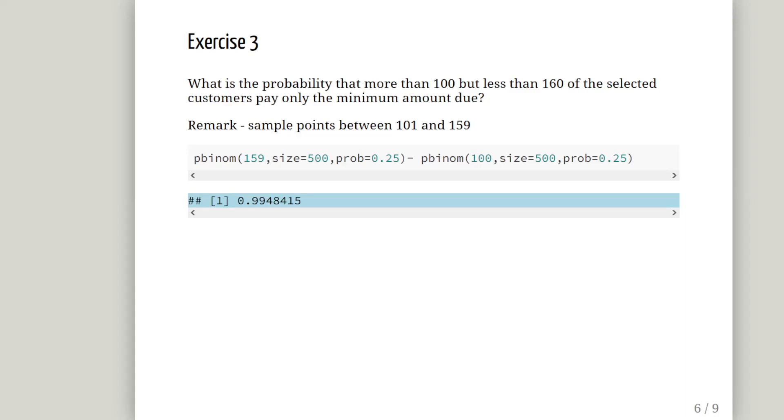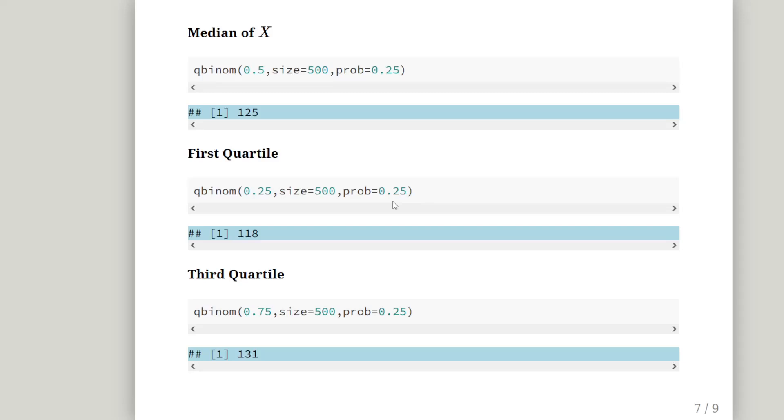Exercise 3: What is the probability that more than 100, so not including 100, but less than 160, so not including 160, of the selected customers pay only the minimum amount due? The sample points we are interested in are 101 to 159. First off we calculate the probability of being less than or equal to 159, and then from that we subtract the probability of the sample points being between 0 and 100. So less than or equal to 100. This chops out anything less than 100 from our probability. And there is our answer, 0.99. So actually most of them. That really makes sense.